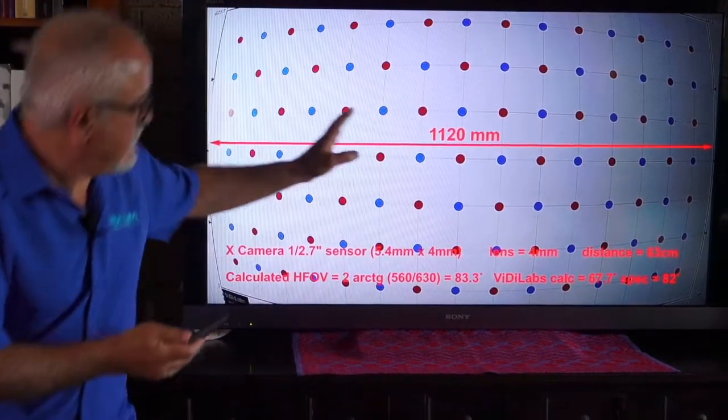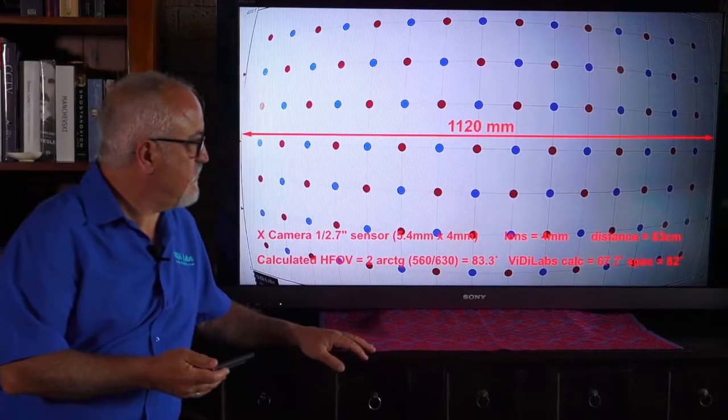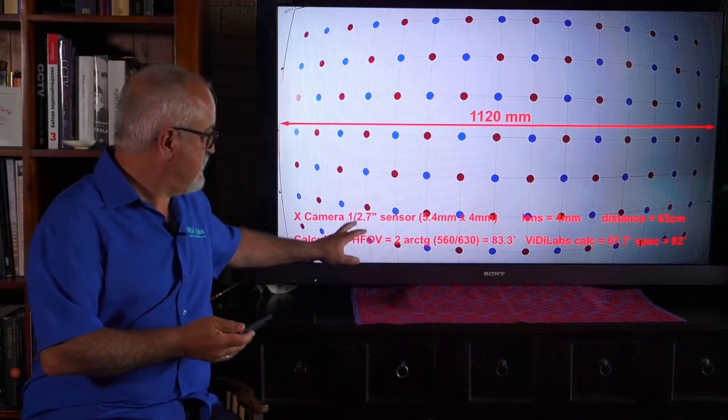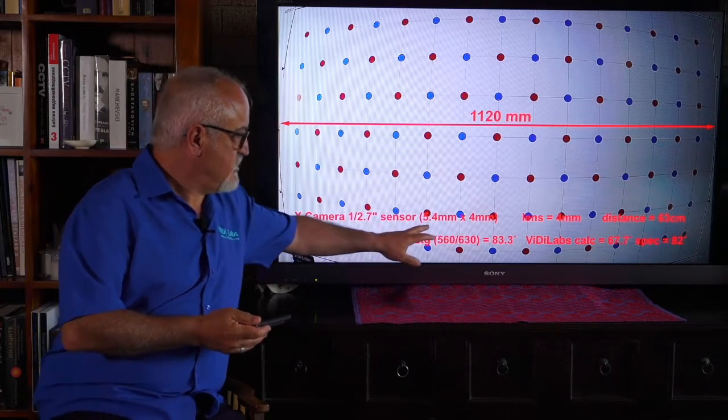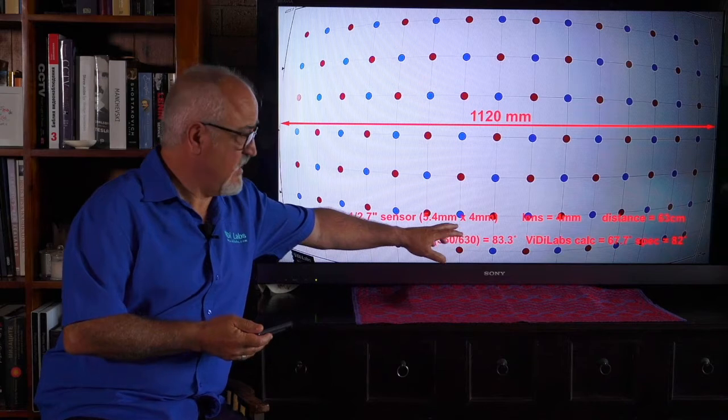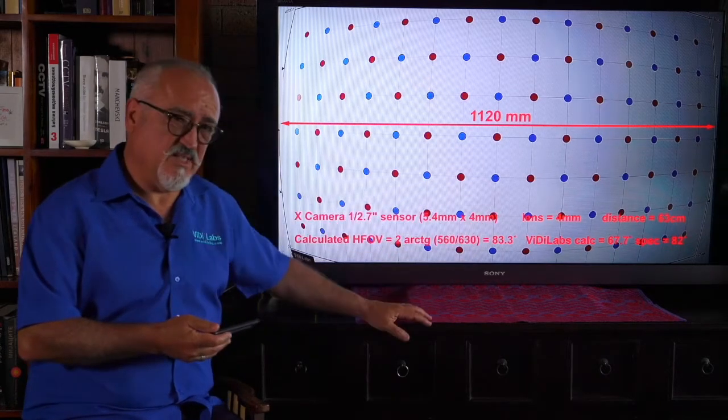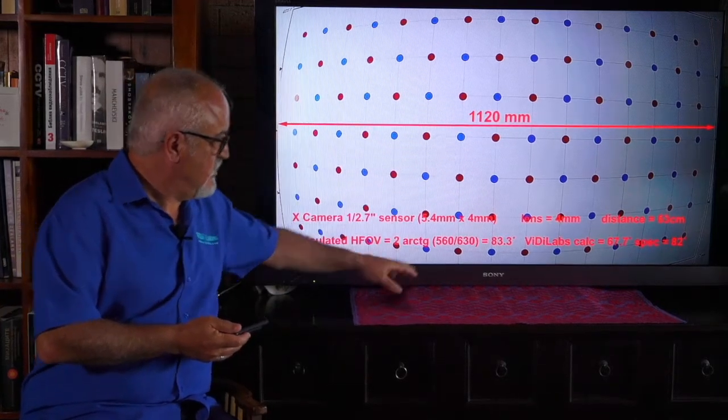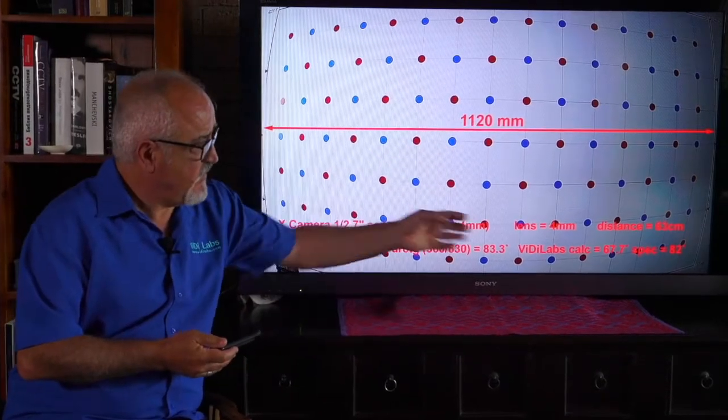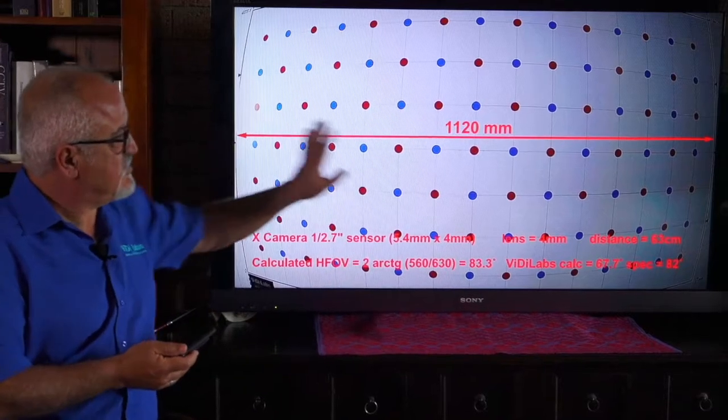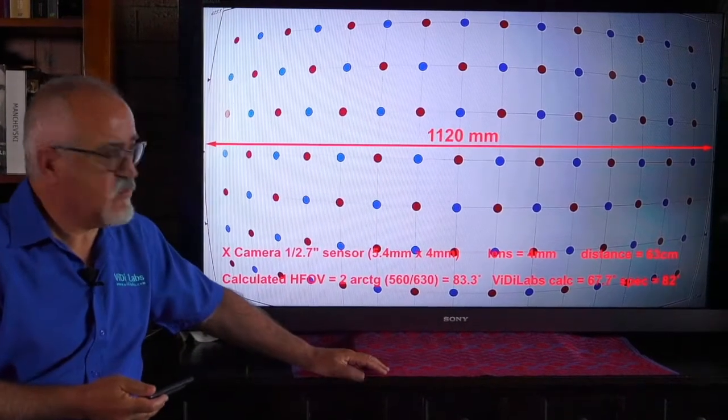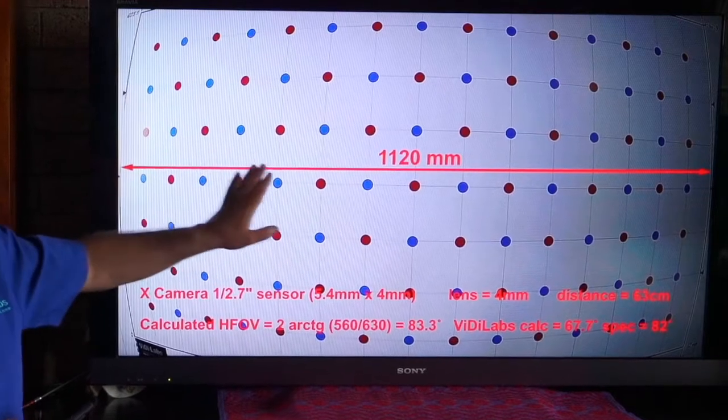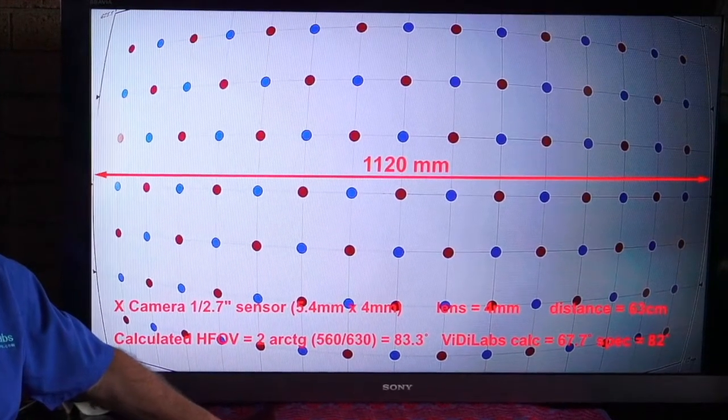So not only you are distorting it, but actually you are cutting on the horizontal vertical field of view. But in any case, if we do the same calculations and input the details of this particular camera, the sensor was, as we said, 1 over 2.7 inch, which is basically 5.4 by 4 millimeter sensor size. The lens is 4 millimeter. The distance was measured to be 63 centimeters to see this exactly to the edge of the chart. The calculated field of view using trigonometry would have been 83.3 degrees. And the manufacturer specification says 82 degrees. But as you can appreciate, this is so curved that actually the Videolabs calculator result of 67.7 is far off the mark of what the manufacturer states. And what actually you can see that angle, but clearly because it's so distorted, it's distorting the actual formula and the accuracy of what you see.